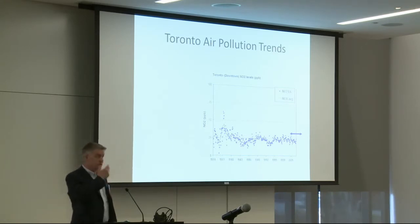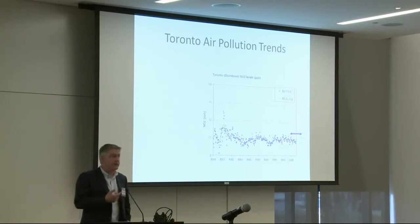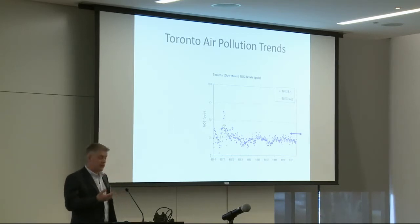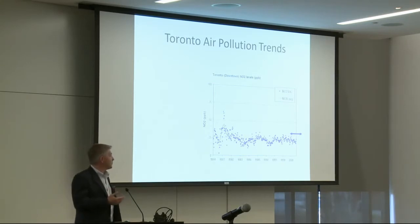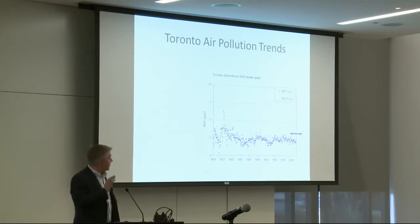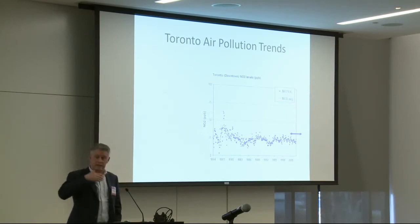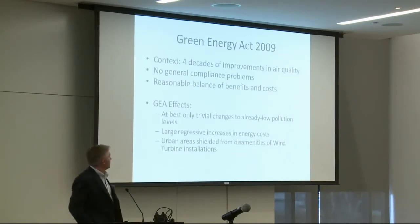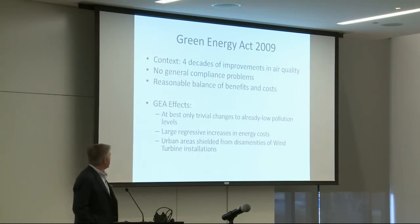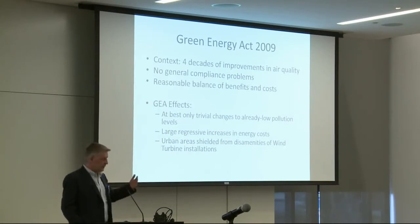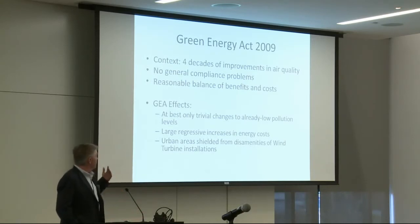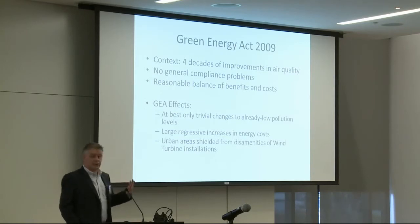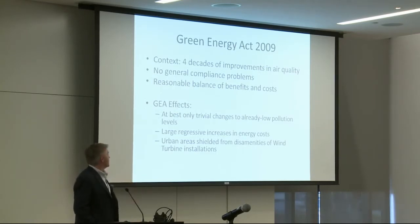Ozone is formed by a reaction between volatile organic compounds and NOx. But it's not a simple matter of reducing one or the other — if you reduce one without reducing the other, under certain circumstances that could actually increase ozone formation. The background is a lot of progress, especially in the 70s and 80s, in controlling air pollution in Ontario. So that brings us to the Green Energy Act of 2009. At that time there were no general compliance problems for air quality in Ontario and there was a reasonable balance of benefits and costs — reduced particulate loads, reduced sulfur dioxide, controlling ozone spikes at manageable costs.